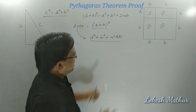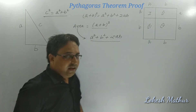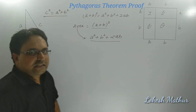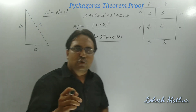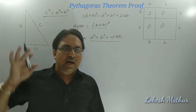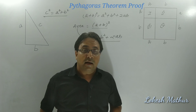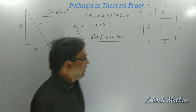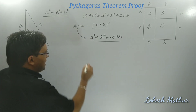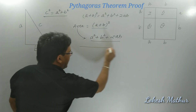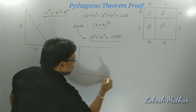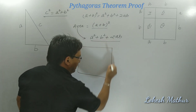But this is not our main objective. Our objective is to prove Pythagoras theorem, which says C square is equal to A square plus B square. Now I will create a diagram in square format to demonstrate this.